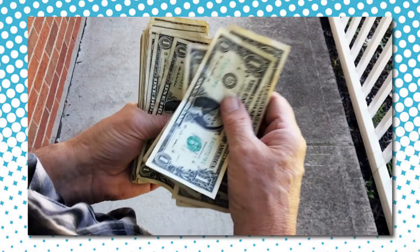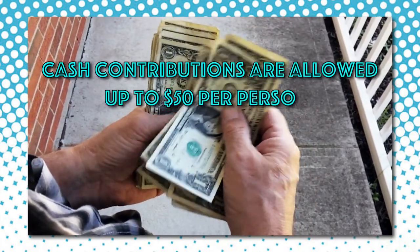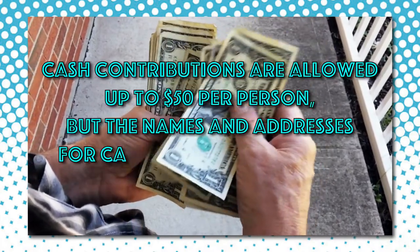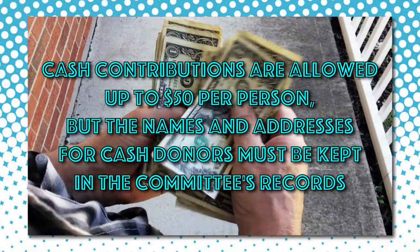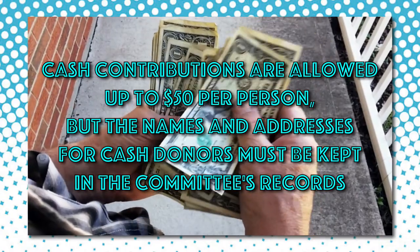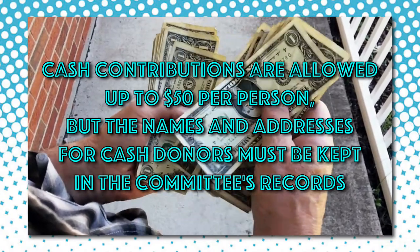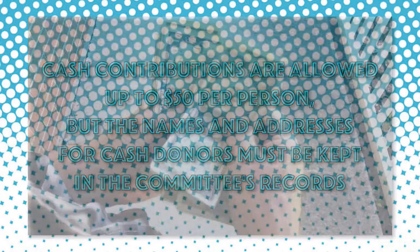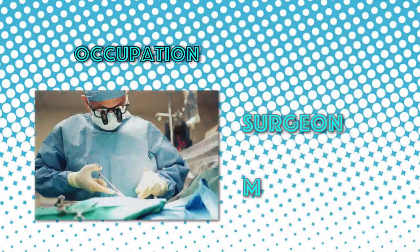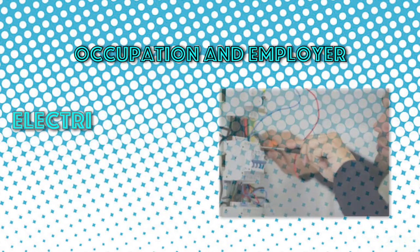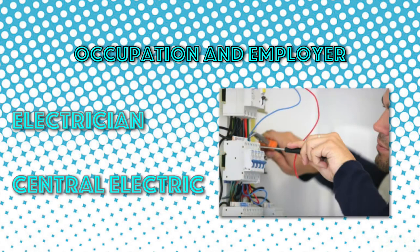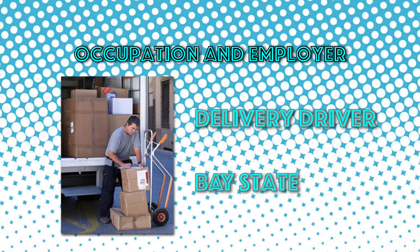Cash contributions are allowed up to $50 per person, but the names and addresses for cash donors must be kept in the committee's records. Cash contributions of $200 or more for the calendar year must include the occupation and employer of the donor.